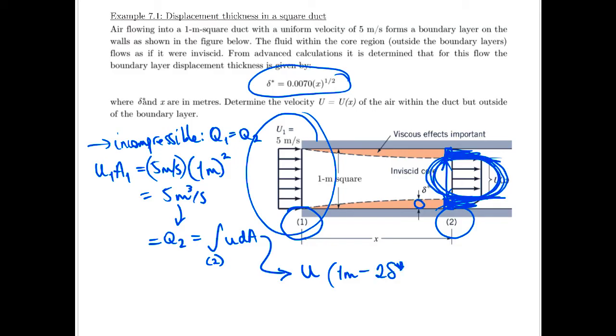And instead of the duct being one meter wide, we're going to minus two of the delta stars. So we have one on this side, one on this side. So our real area that we're flowing over is this guy shown here. So then we square that.